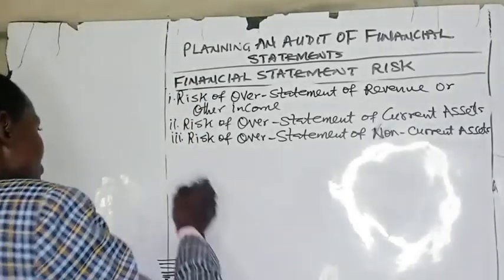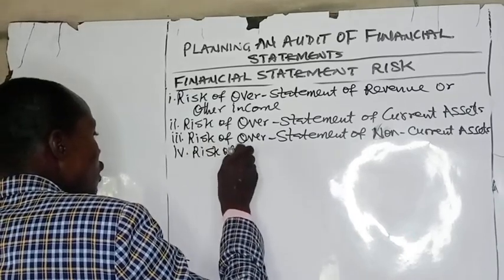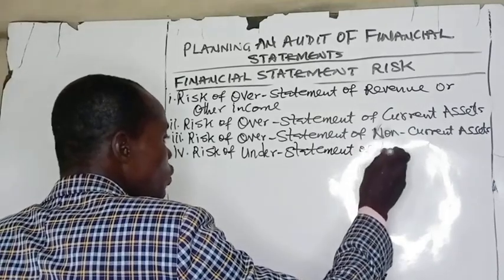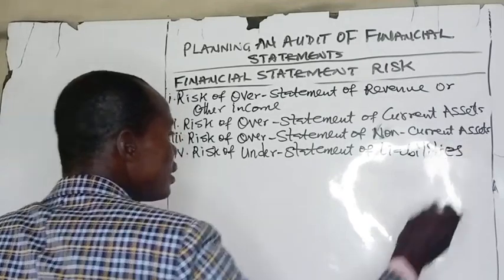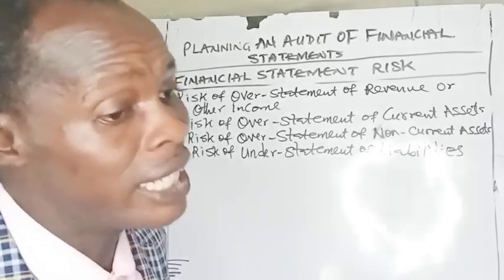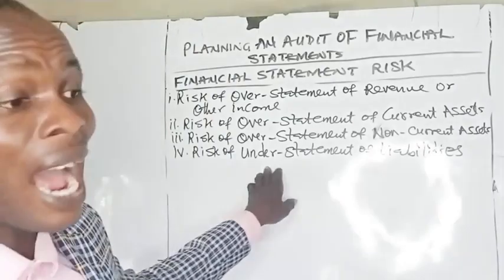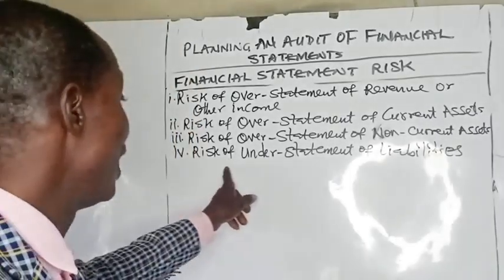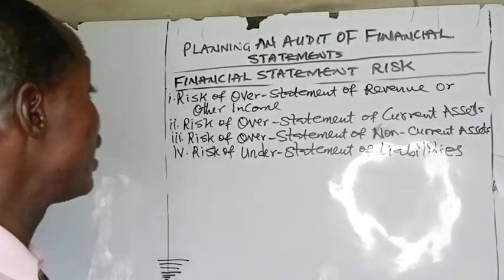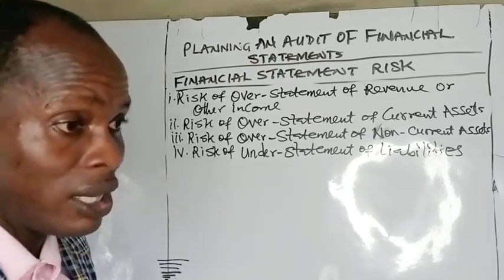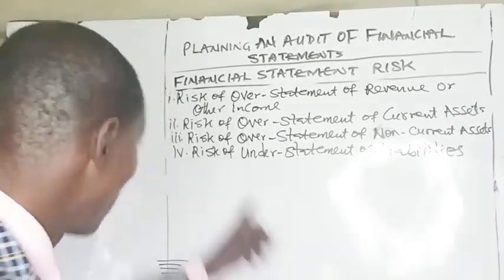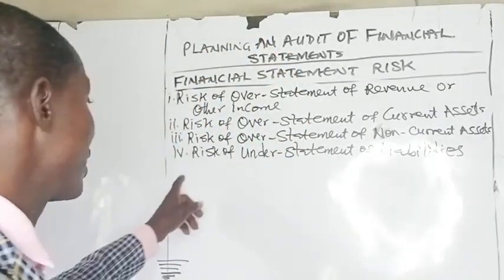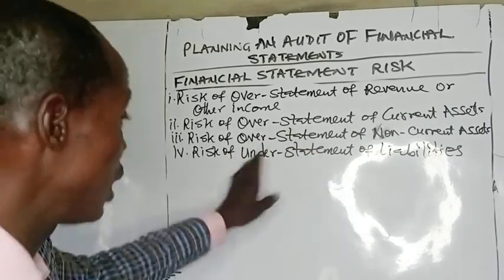Number four, risk of understatement of liabilities. IAS 37 deals with provisions for contingent assets and liabilities. Where provisions are not made in the financial statement when it is appropriate to do so, the liability will be understated. When provisions are not recognized, liability is understated, and this equally leads to overstatement of profit in the financial statement — a significant threat.